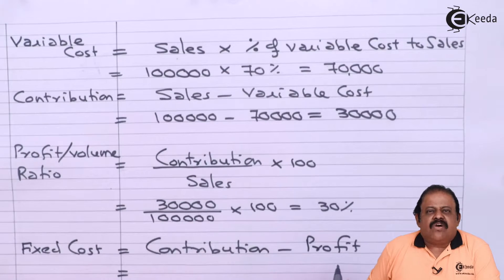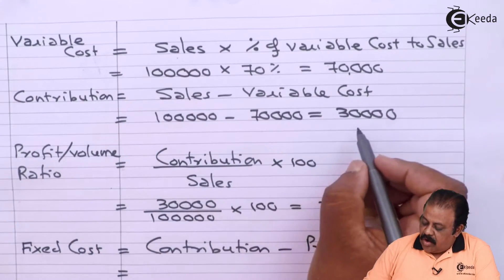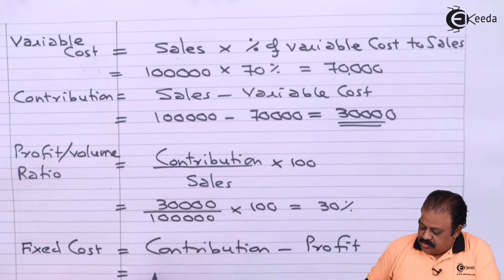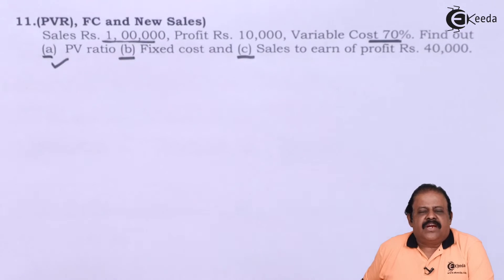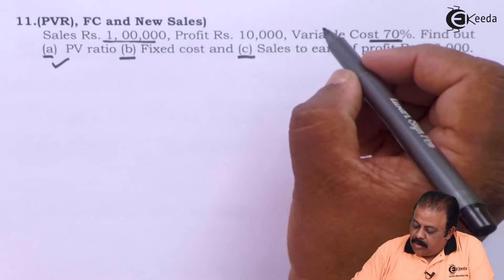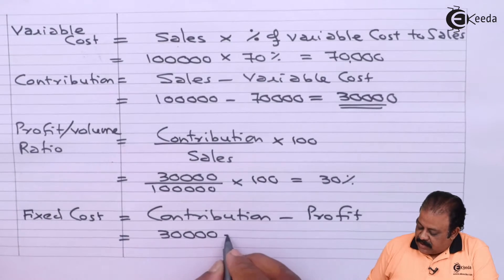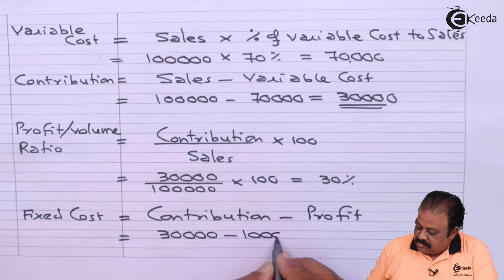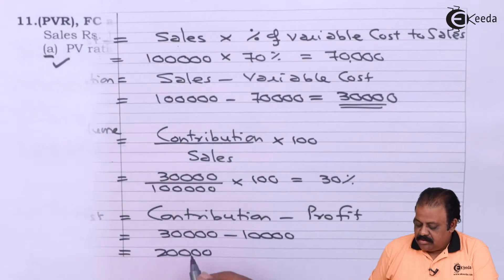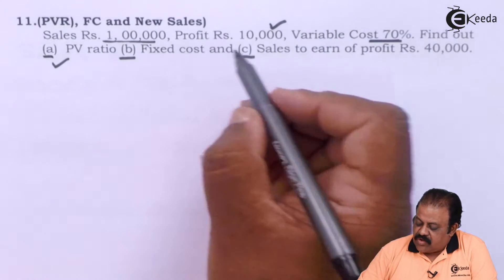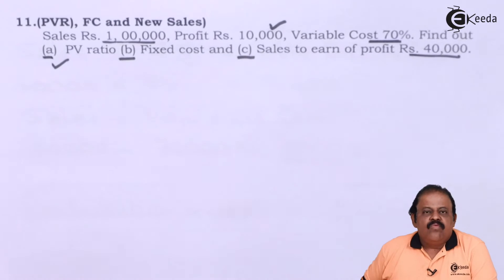Formula for fixed cost will be contribution minus profit. We have calculated contribution here 30,000. In question itself they have given amount of profit 10,000. This 10,000 profit will be deducted from 30,000 contribution. We arrive at fixed cost 20,000. So we have calculated fixed cost. Third, sales to earn profit of rupees 40,000.